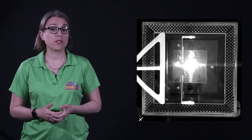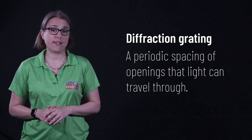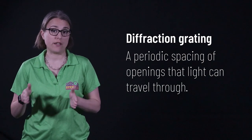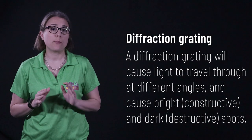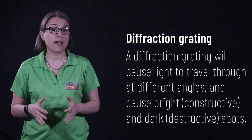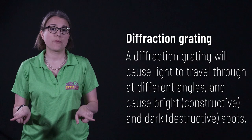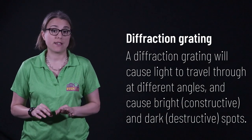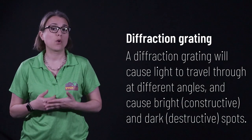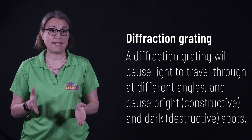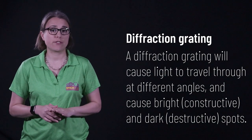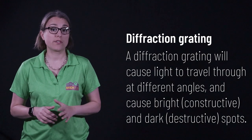Diffraction also occurs with all types of electromagnetic waves, not just visible waves. Radio waves, for example, will diffract around buildings, mountains, and other terrain. A diffraction grating is a component that has regularly spaced openings for light to pass through. By creating a periodic pattern, light will get diffracted through several different angles. This is because the spacing between the openings and the wavelength of light will cause regions of constructive and destructive interference. Where the interference is constructive, we will see bright spots. The destructive interference will be in the dark spots.